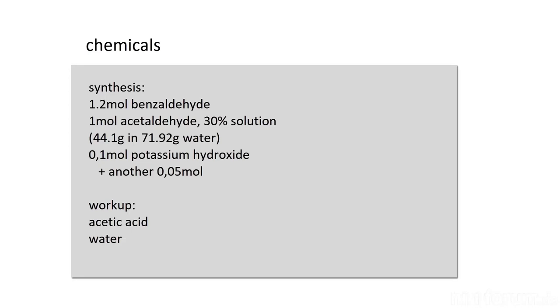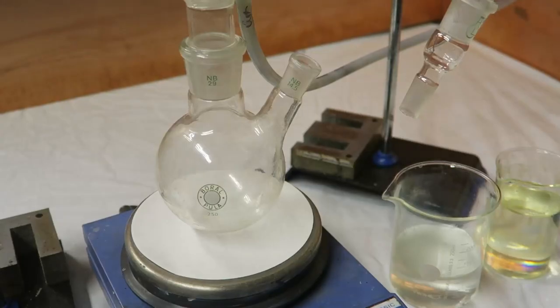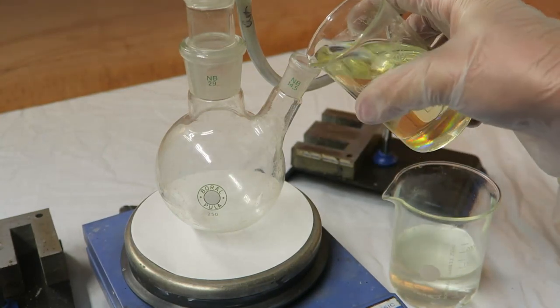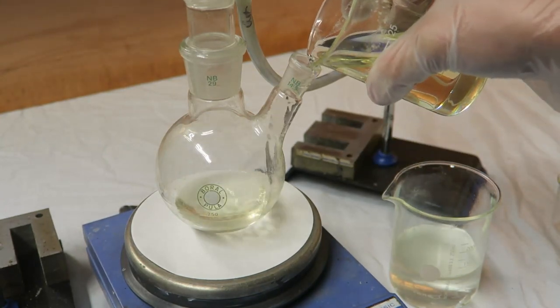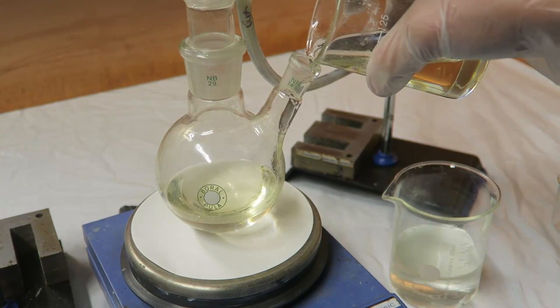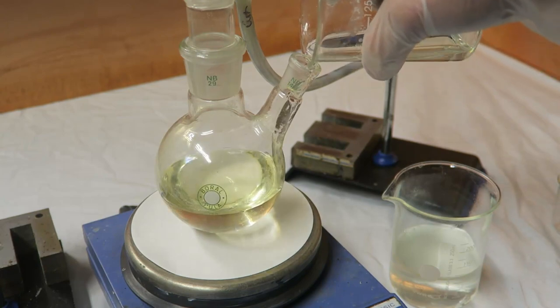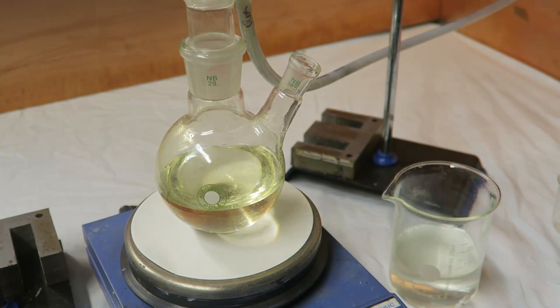Also, some potassium hydroxide is dissolved in water and added as a catalyst. All of the benzaldehyde is added to a two-necked round-bottom flask with a condenser on top. You can see that my benzaldehyde is already contaminated with benzoic acid due to oxidation.